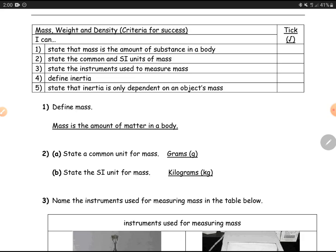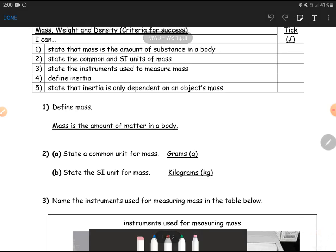Mass is basically the amount of matter in a body. It is usually measured with the unit of grams, as you can see over here, but the SI unit itself should actually be kilograms.